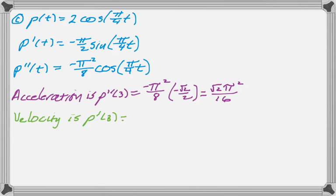And so P prime of 3 is going to be negative pi over 2, and then the sine of 3 pi over 4 is positive radical 2 over 2. And so I end up with something less than 0.